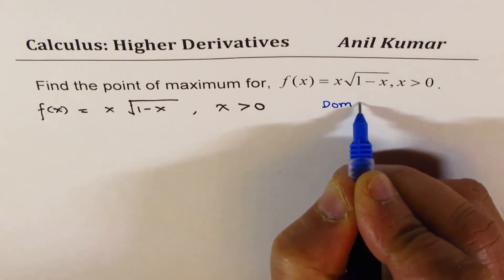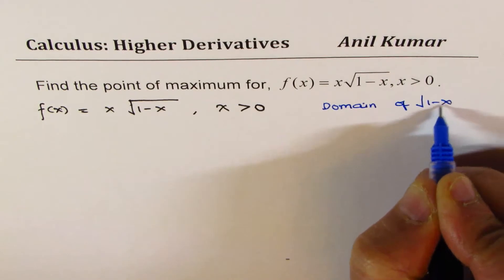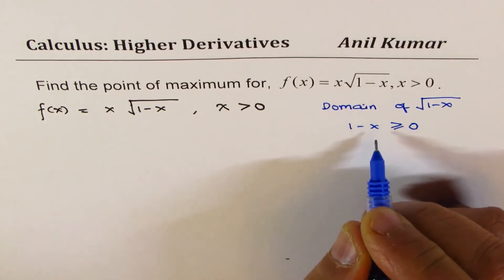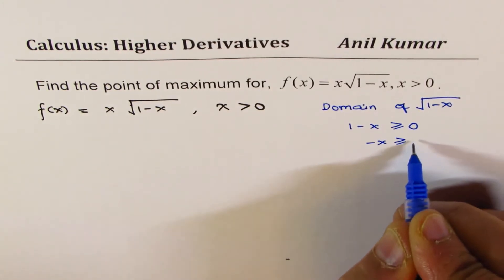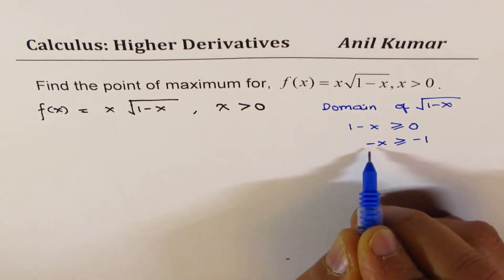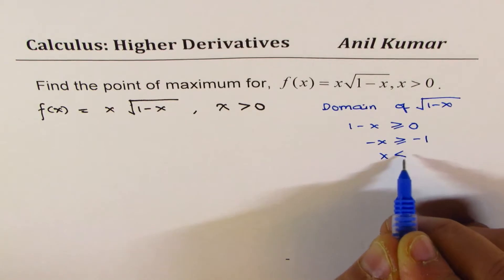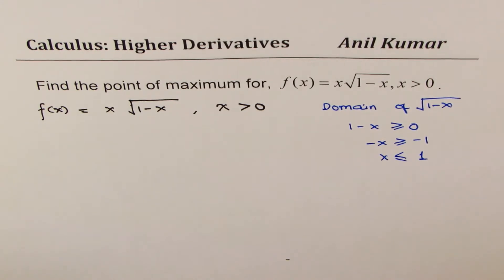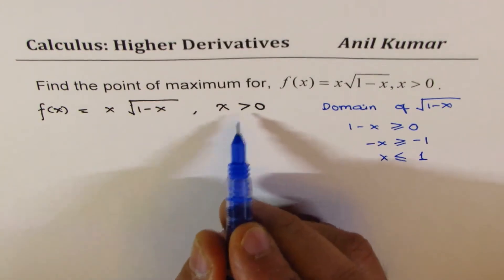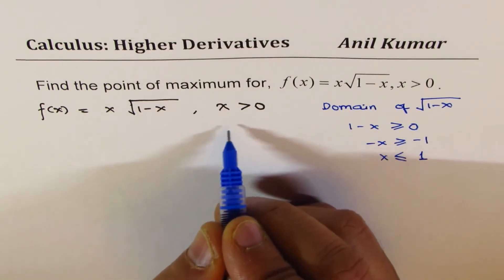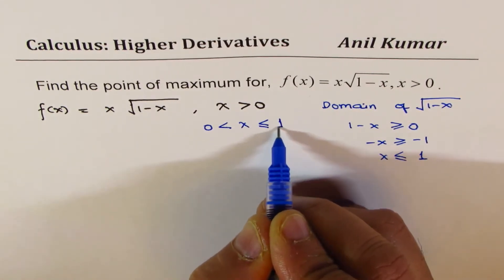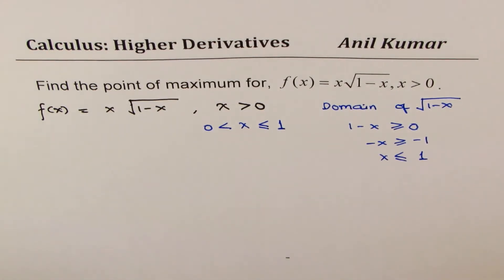For the domain of √(1−x), we need 1 − x ≥ 0. That gives −x ≥ −1, and multiplying by a negative number flips the sign, so x ≤ 1. Combined with x > 0, we are working in the domain 0 < x ≤ 1. That is our restricted domain.